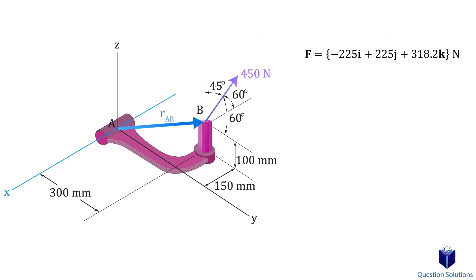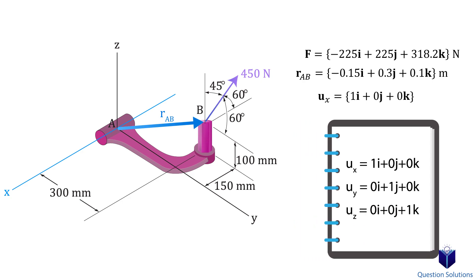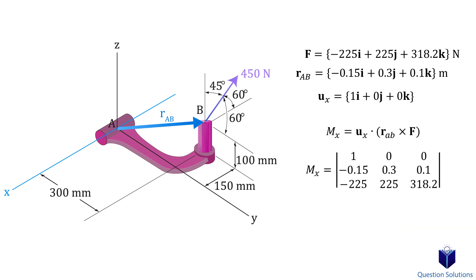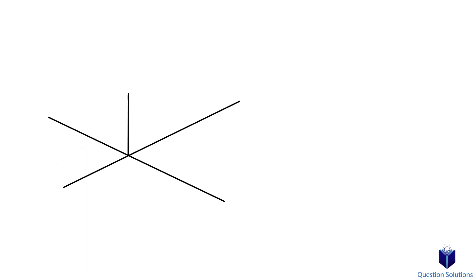Next we need a position vector from A to B, noting that we converted millimeters to meters. Since we're finding the moment about the x-axis, our unit vector is simply (1, 0, 0). For reference, the unit vector for the y-axis is (0, 1, 0) and for the z-axis it's (0, 0, 1). We plug everything into our equation and find the determinant of the scalar triple product, which gives us the moment created about the x-axis.